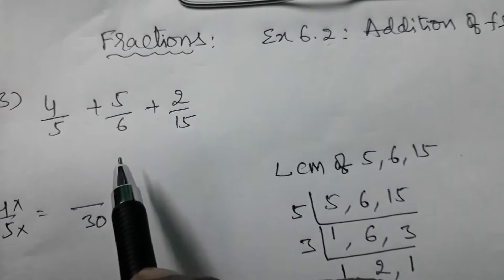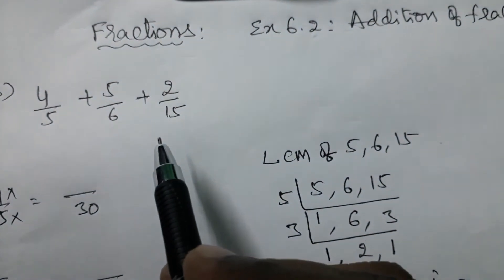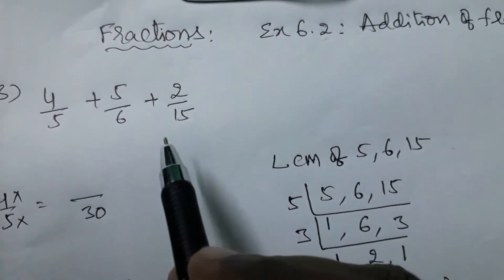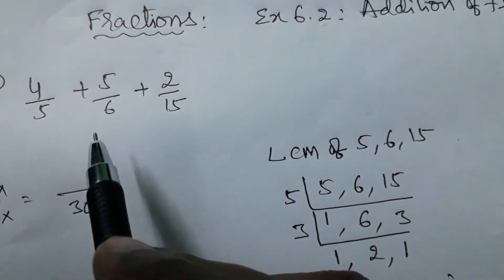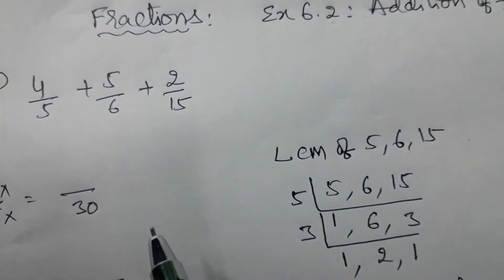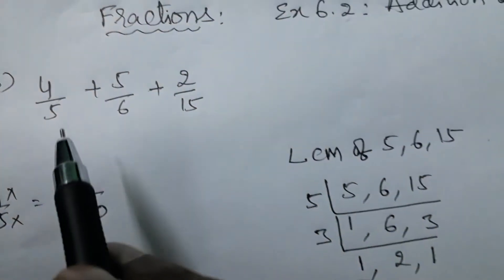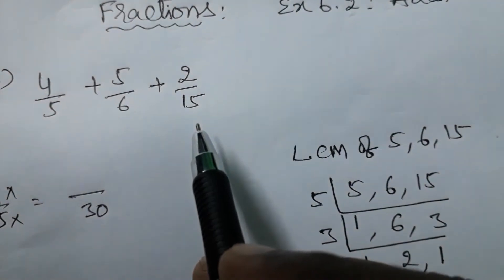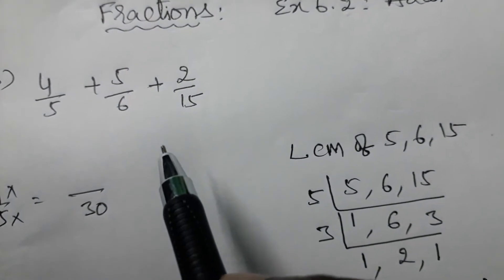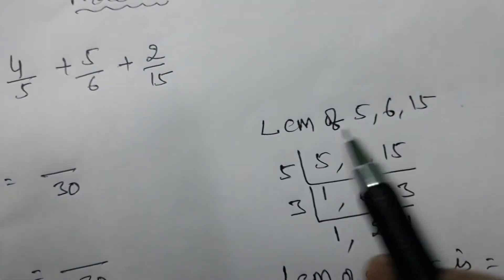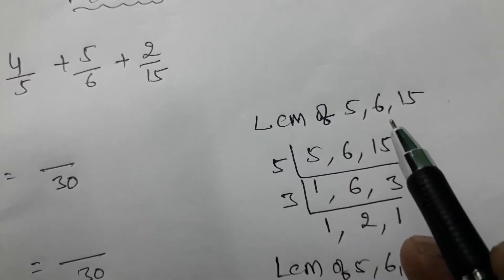These are unlike fractions, not like fractions. For like fractions, the denominators must be the same, but here they are unlike fractions. When unlike fractions are given, we have to change them into like fractions so we can add easily. To do that, take the denominators 5, 6, and 15 and find the LCM for them.